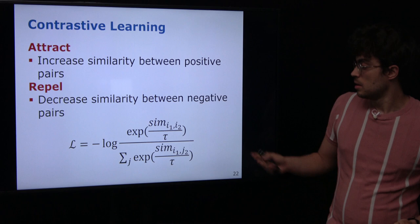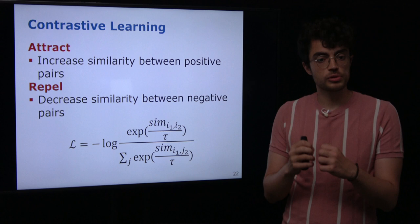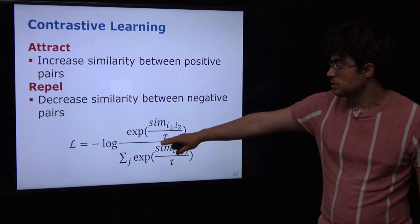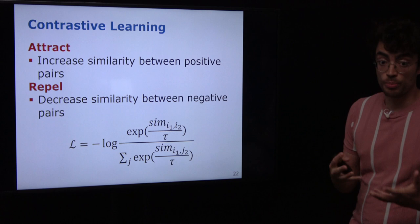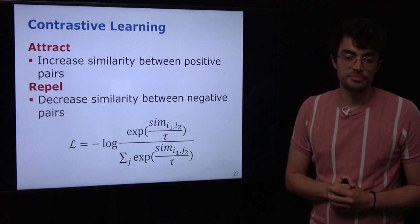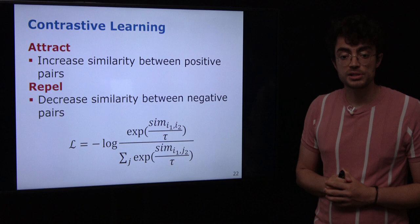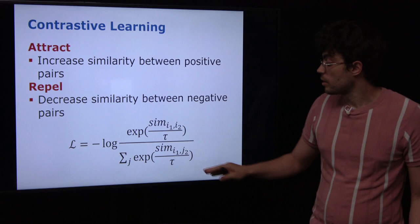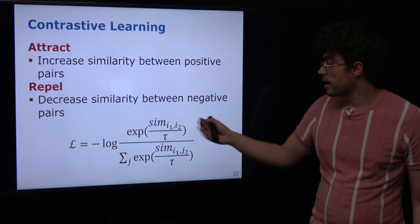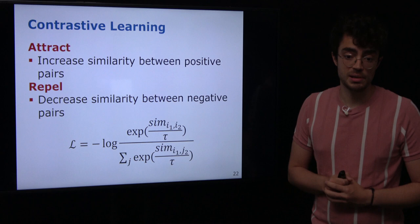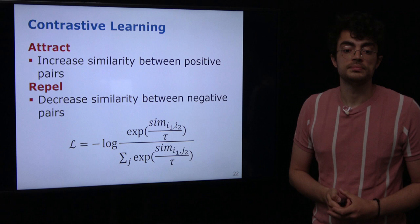How does this happen using the contrastive loss? To attract samples from the same source, we compute a temperature-scaled cosine similarity, which appears in the loss function. We compute the same for positive pairs and negative pairs. In the softmax loss function, we want the similarity between images from the same source — positive pairs — to be as high as possible, while the similarity for negative pairs should be as low as possible. By optimizing this loss, similarity increases for images from the same source and decreases for images from different sources.